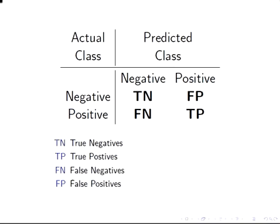We can tabulate our data and outcomes like this. We have the actual classes — actually negative and actually positive — and the predicted classes — predicted negative and predicted positive. Our outcomes are: true negative, false negative, false positive, and true positive. These are how we tabulate the results.